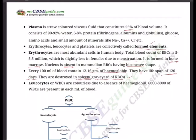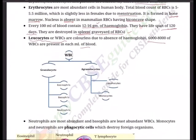Erythrocytes have a red-colored, iron-containing complex protein called hemoglobin. Leukocytes, also known as white blood cells, are colorless due to the absence of hemoglobin. 6,000 to 8,000 WBCs are present in each ml of blood. They are our soldiers — defenders of the body. There are varieties of WBCs: granulocytes and agranulocytes. Granulocytes include neutrophils, eosinophils, and basophils.